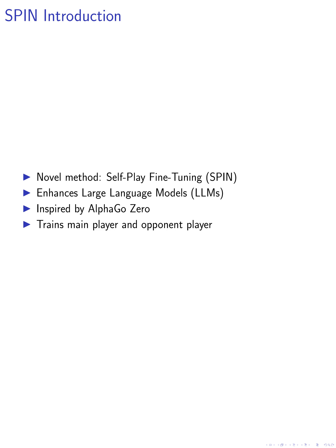We achieve this by employing a self-play approach, where the LLM competes against itself and learns from the responses it generates. This method is inspired by the AlphaGo Zero model, which has demonstrated exceptional performance in multi-agent reinforcement learning. We introduce the concept of training a main player to distinguish LLM responses from human responses, and an opponent player to generate responses that are indistinguishable from human responses.